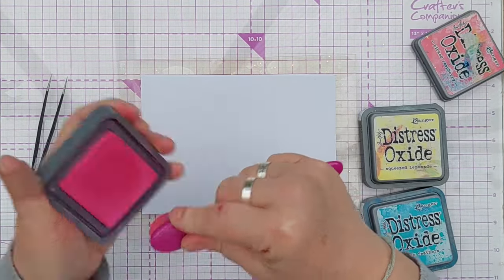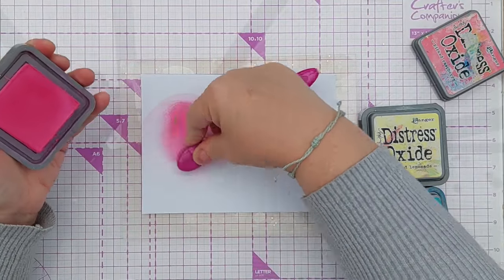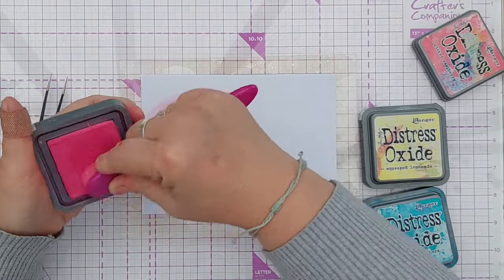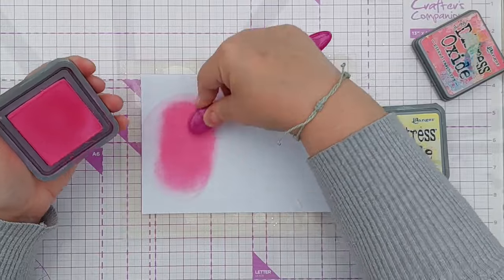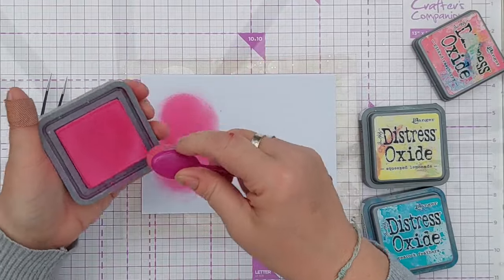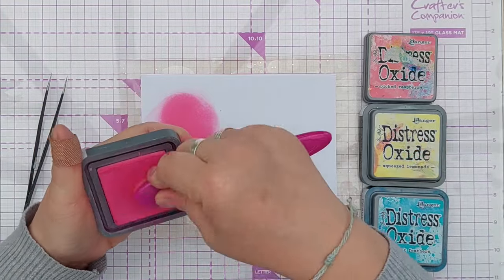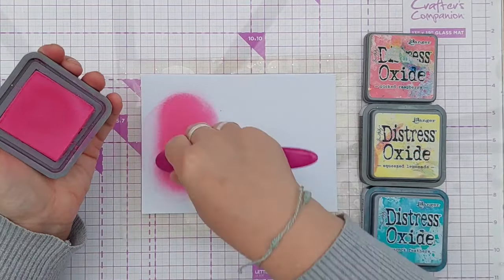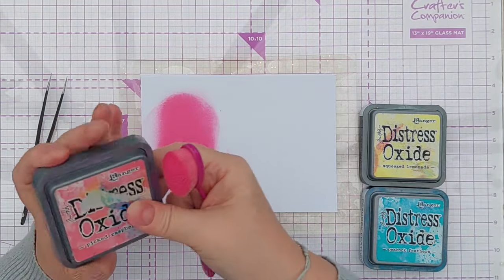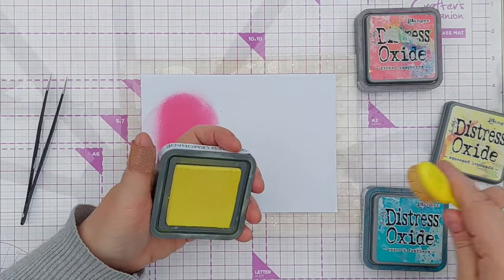So I'm going to use Picked Raspberry for a nice bright pink. I was asked the other day, well it'll be a couple of weeks ago now by the time this video goes up, how often I re-ink my Distress Oxides and the answer is about once every six years. These three, I think these are some of my originals and I bought these about six years ago when I think they first came out and I've never re-inked them but they are starting to get a bit dry.